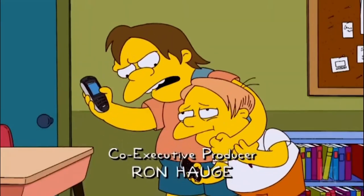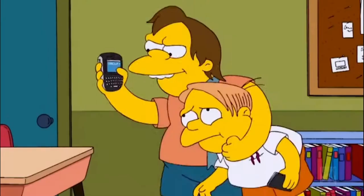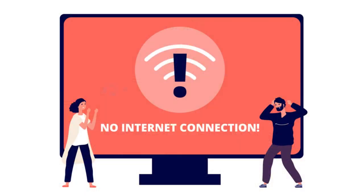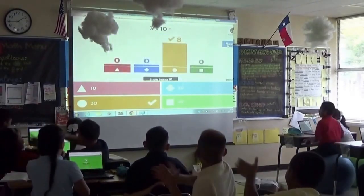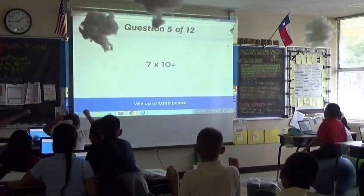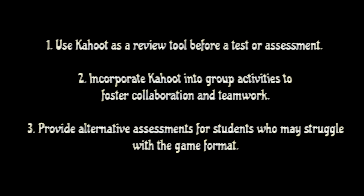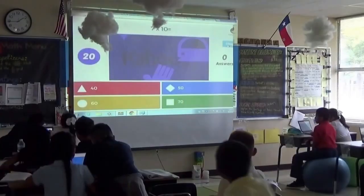While Kahoot offers many benefits, there are also some issues to consider when using the tool in teaching and learning. Some common issues include potential distractions caused by the competitive nature of the game, which results in limited time for in-depth discussions or extended responses, as well as accessibility concerns for students with disabilities or those without internet access. Despite these challenges, educators can mitigate these issues by using Kahoot strategically — as a review tool before a test or assessment, incorporated into group activities to foster collaboration and teamwork, or by providing alternative assessments for students who may struggle with the game format.